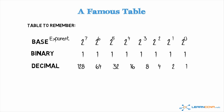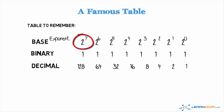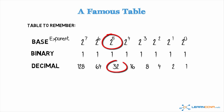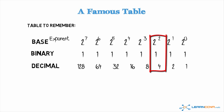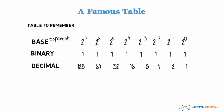What you have in this table is firstly your base exponent: two to the power of seven, two to the power of six, two to the power of five, all the way down to two to the power of zero. Put binary ones below that, and then the decimal equivalent. Two to the power of seven equals 128, two to the power of six equals 64, two to the power of five is 32, two to the power of four is 16, two to the power of three is eight, two to the power of two is four, two to the power of one is two, and two to the power of zero is one. These values are really important in IPv4, so it's well worth remembering this table.